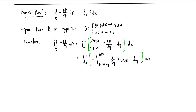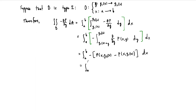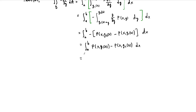So this integral computes as the negative of the integral from a to b of [P(x, g2(x)) minus P(x, g1(x))] dx. Then we use the minus sign to switch the order, giving us the integral from a to b of P(x, g1(x)) minus P(x, g2(x)) dx. Distributing, this is the integral from a to b of P(x, g1(x)) dx, minus the integral from a to b of P(x, g2(x)) dx. This is the left-hand side of what we hope to prove.